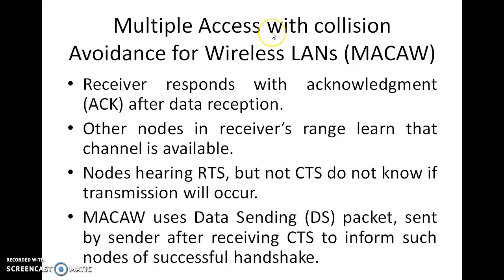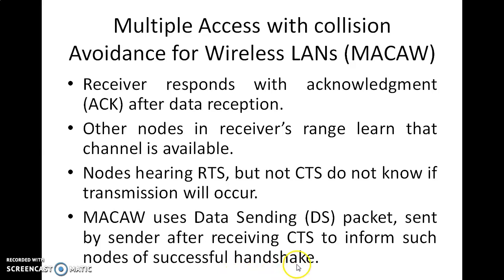Next is MACAW — Multiple Access with Collision Avoidance for Wireless LANs. Here, the receiver responds with an acknowledgement signal (ACK) after data reception. Other nodes in the receiver range learn that the channel is available. Nodes hearing RTS but not CTS do not know if transmission will occur. MACAW uses a Data Sending (DS) packet sent by the sender after receiving the CTS to inform such nodes of a successful handshake.